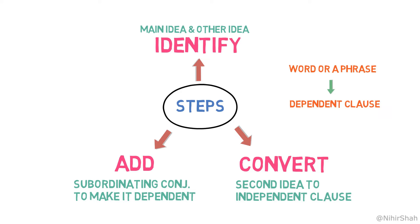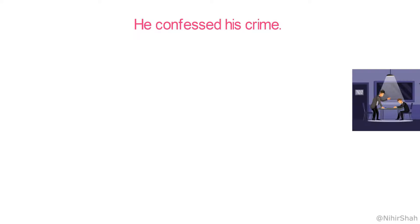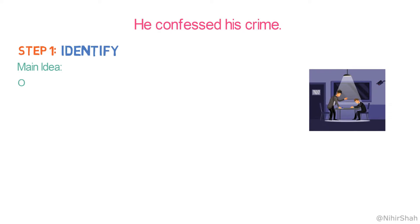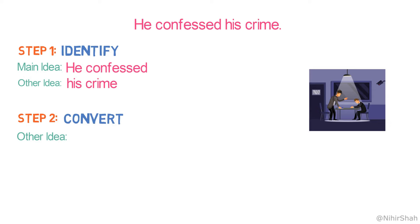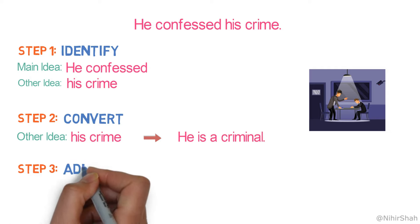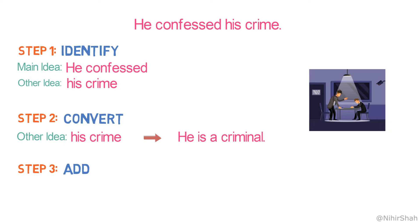Let's understand it with an example: 'He confessed his crime.' Step one, identify the main idea and other ideas. Here, 'He confessed' is the main idea and 'his crime' is the second idea. Step two, convert the second idea into an independent clause — we have converted the phrase 'his crime' to a clause 'he is a criminal.' Step three, add the most appropriate subordinating conjunction. Here I have used 'that.' So, the final sentence is: 'He confessed that he is a criminal.'